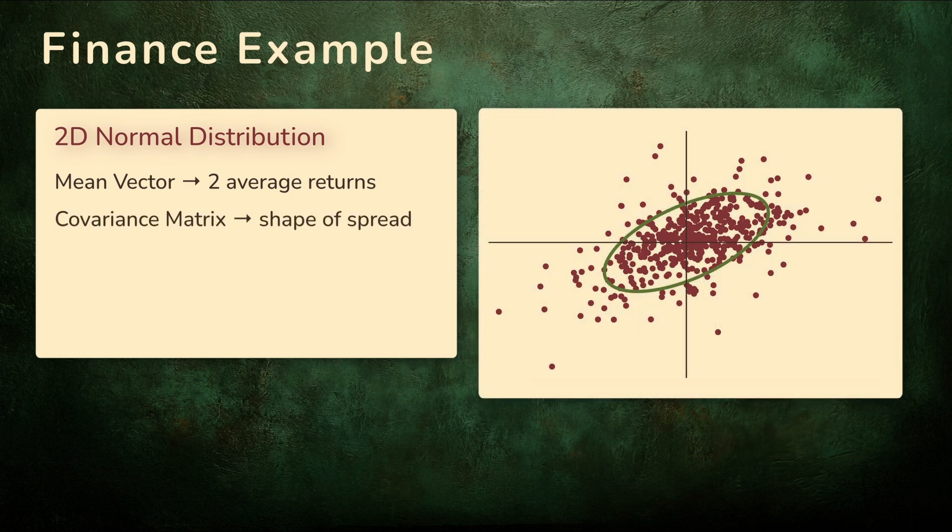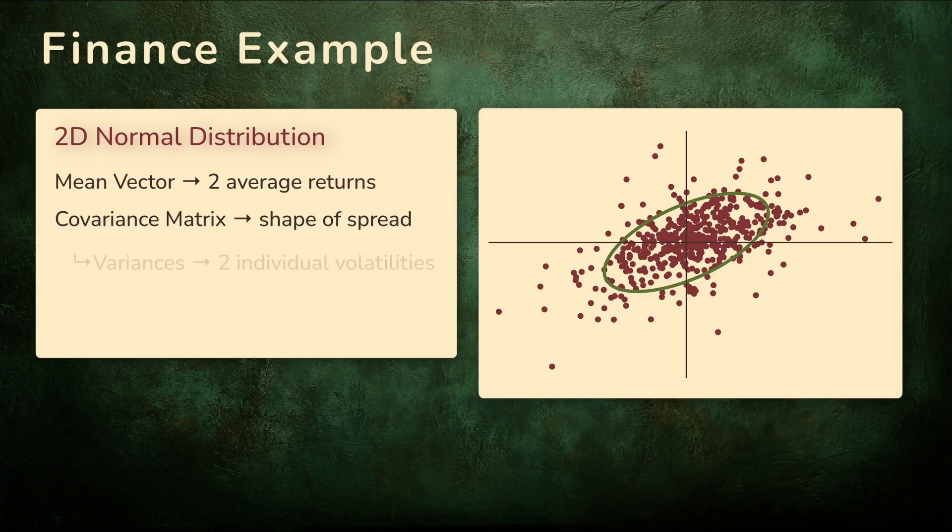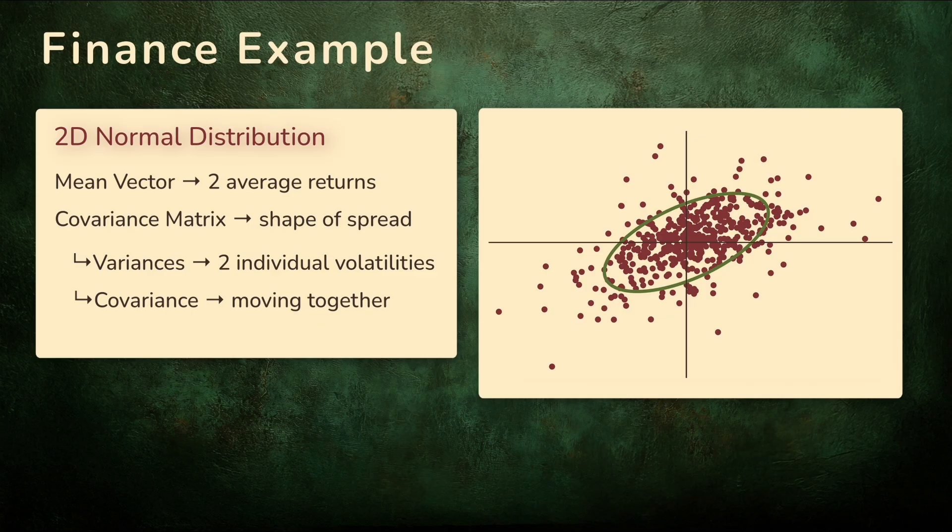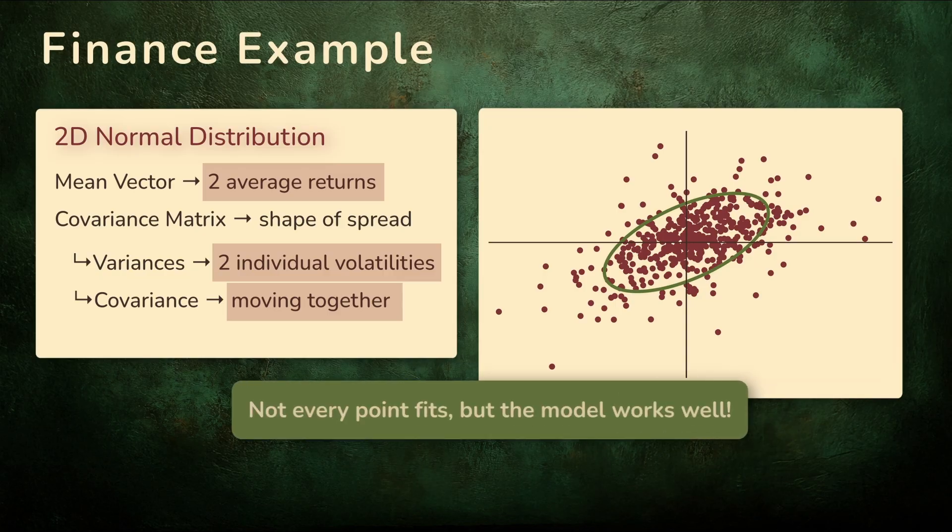The covariance matrix then describes the shape of the spread. The variances tell us how volatile each stock is on its own. The covariance captures how much the two move together. So with these five numbers, the two from the mean vector and three from the covariance matrix, we have a clean mathematical way to describe how these two stocks move together. Not every single point will fit perfectly, but the 2D normal distribution gives us a nice summary of the pattern.